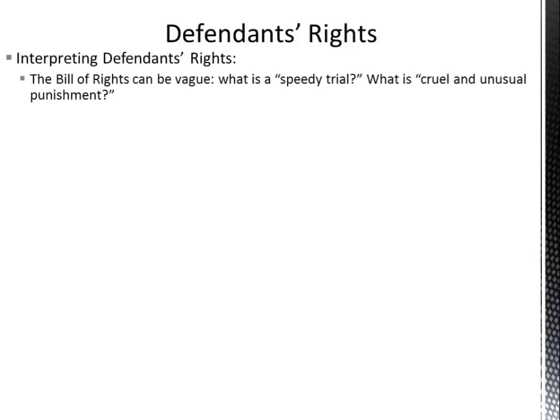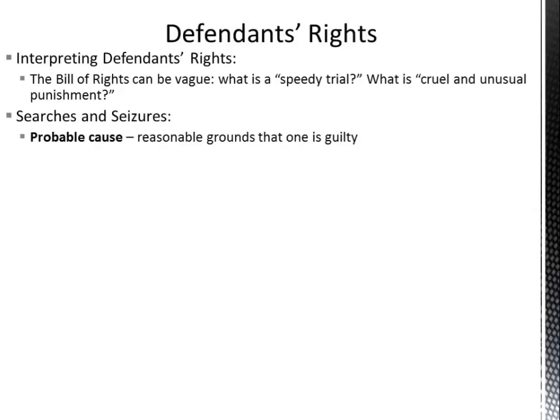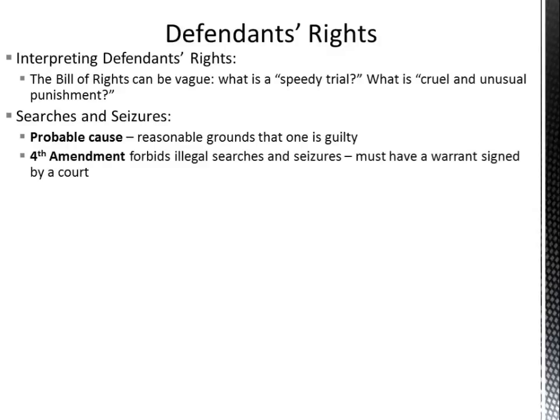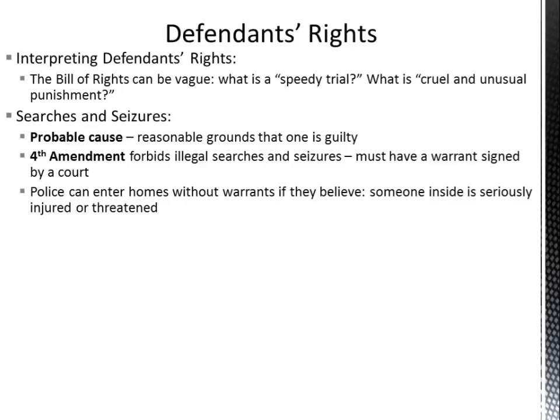Now let's shift to defendants' rights. If an individual is arrested, there are certain rights they have. The Bill of Rights can be very vague — for example, guaranteeing the right to a speedy trial or protection from cruel and unusual punishment. What is probable cause? It means reasonable grounds that one is guilty. The Fourth Amendment prohibits illegal searches and seizures — police officers need a warrant to come into your house in most cases, though exceptions exist if someone inside is seriously injured or being threatened, or if they are pursuing a suspect.